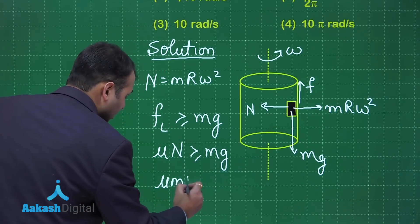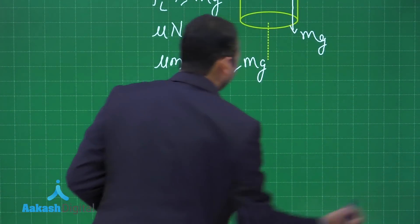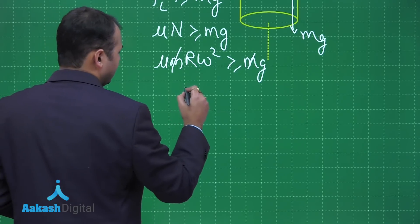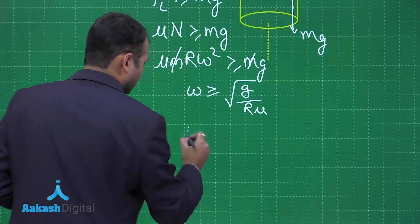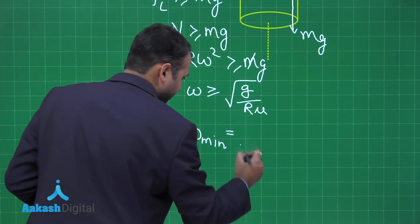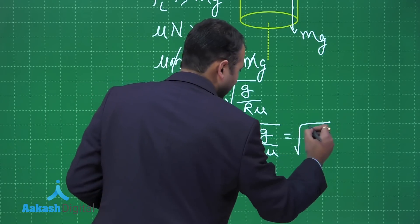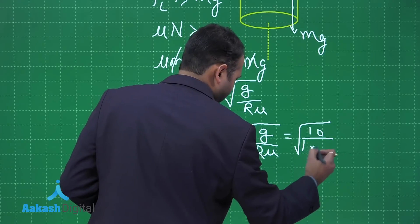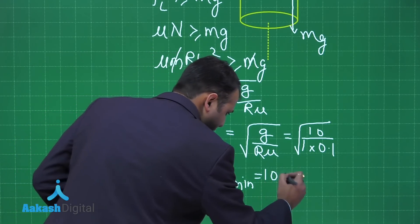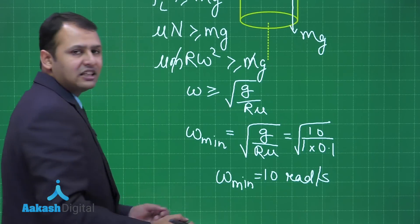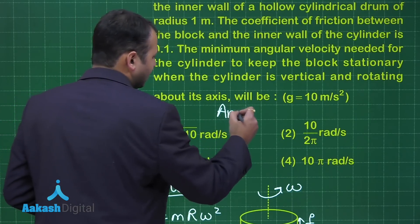From here you just put the values, you will get mRω² that is greater than mg. From here m and m will be cancelled and you will get ω equals square root of g upon Rμ. So the minimum value of ω can be given by square root of g upon Rμ. Let's put on the values: you will get 10, this was 1 into 0.1. Solving this, ω minimum will be equals to 10 radian per second. Among the four options given to us, option number 3 would be the correct answer to this question.